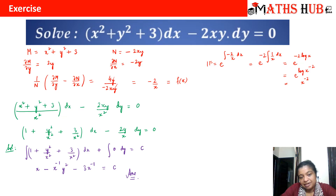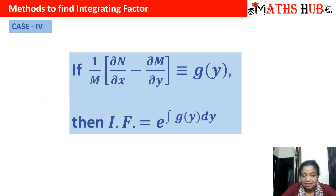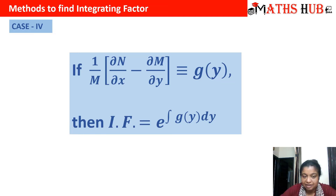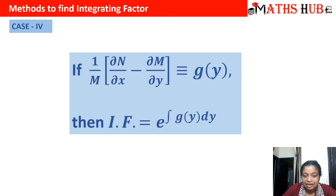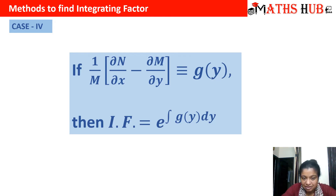Now what is the next case of integrating factor? Case 4 says you can do the reverse: instead of ∂M/∂y − ∂N/∂x, you take ∂N/∂x − ∂M/∂y, divide by M, and it should be a function of y. The integrating factor will be e raised to power ∫g(y) dy.